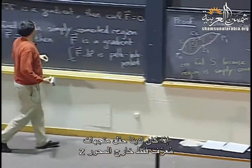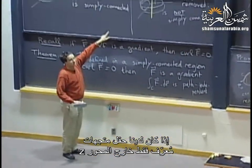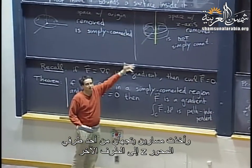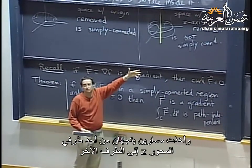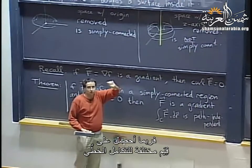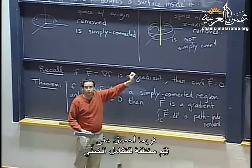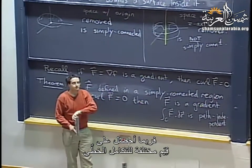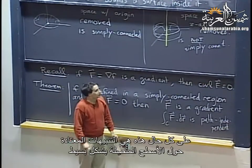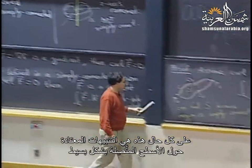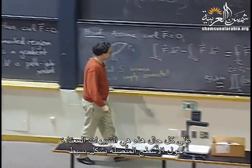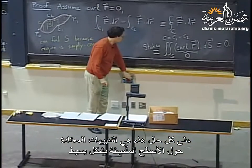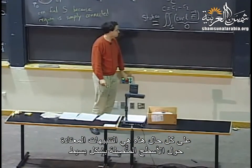For that proof, we needed to find a surface to apply Stokes' theorem to, and that required the region to be simply connected. If we had a vector field defined only outside the z-axis, and we took two paths going on one side and the other side of the z-axis, we might obtain different values of the line integral.